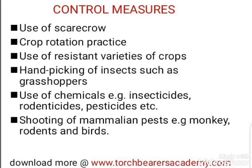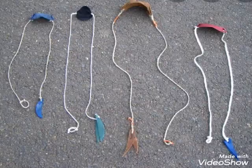You can also use hand picking for large insects such as grasshoppers. Chemicals can also be used: rodenticides for killing rodents, insecticides for killing insects, pesticides for killing pests in general, and nematicides for killing nematodes. Finally, shooting of mammalian pests — rodents and birds — can be done using guns or catapults, which farmers commonly use.